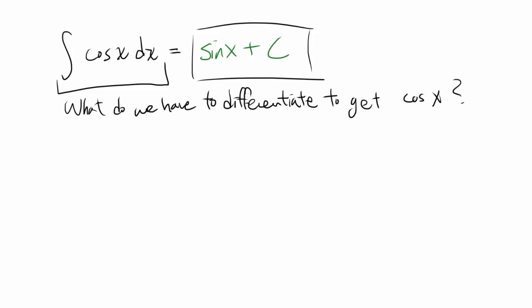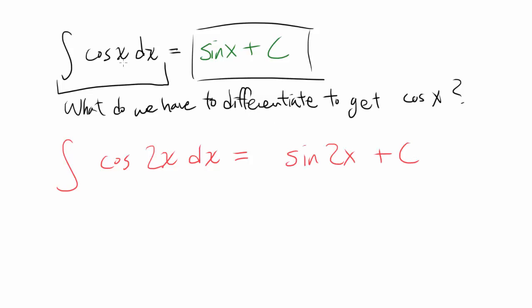Now let's say another stranger comes up to you, smiling because he thinks you won't be able to answer this one. This time it's the integral of cosine of 2x dx. And you say: okay, if it's cosine of x it comes out to be sine of x — so is the answer not sine of 2x plus C? And this stranger is going to smile and take away some of your money, because it is not.